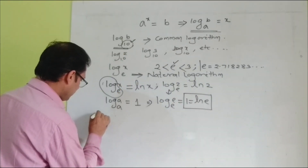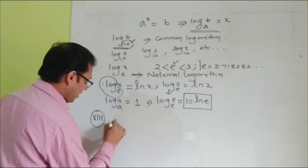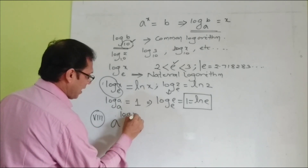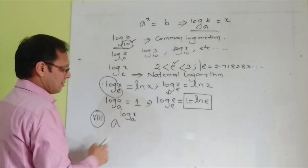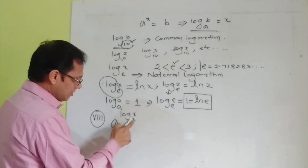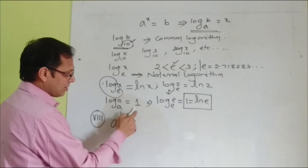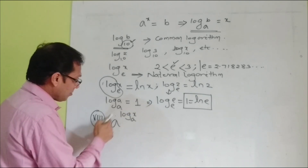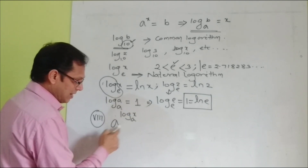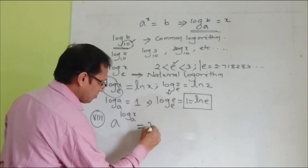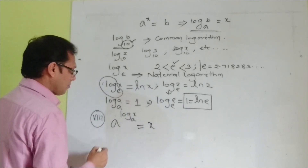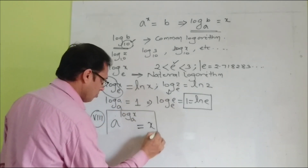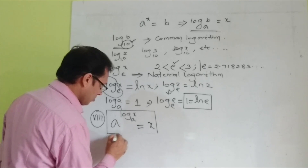The eighth rule is: if a to the power log x to the base a, meaning if the base in the exponential form and the base of the logarithm are both a, then your answer should be x. This is one of the very important basic fundamental rules for logarithm.